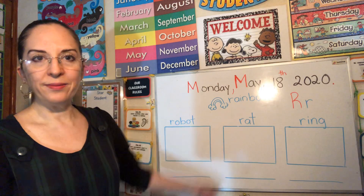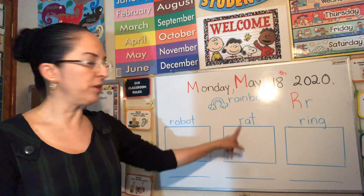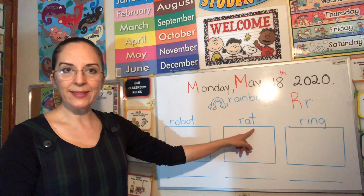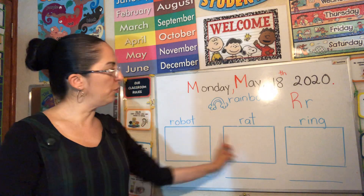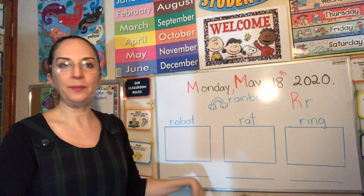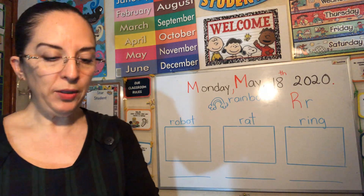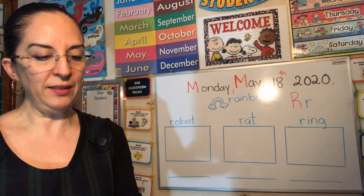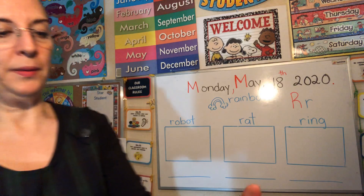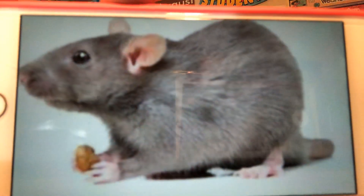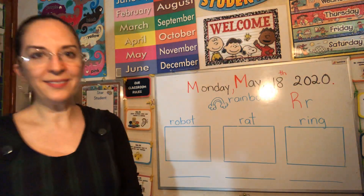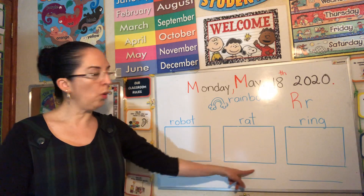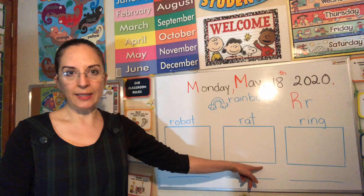Next word. Let's spell the word: R-A-T. Rat. Now read again the word. Rat. Again: rat. Very good. I'm going to show you a picture. Do you like rats? I don't like it. This is a rat. Draw a rat. Write the word here — the complete word: R-A-T. Rat.